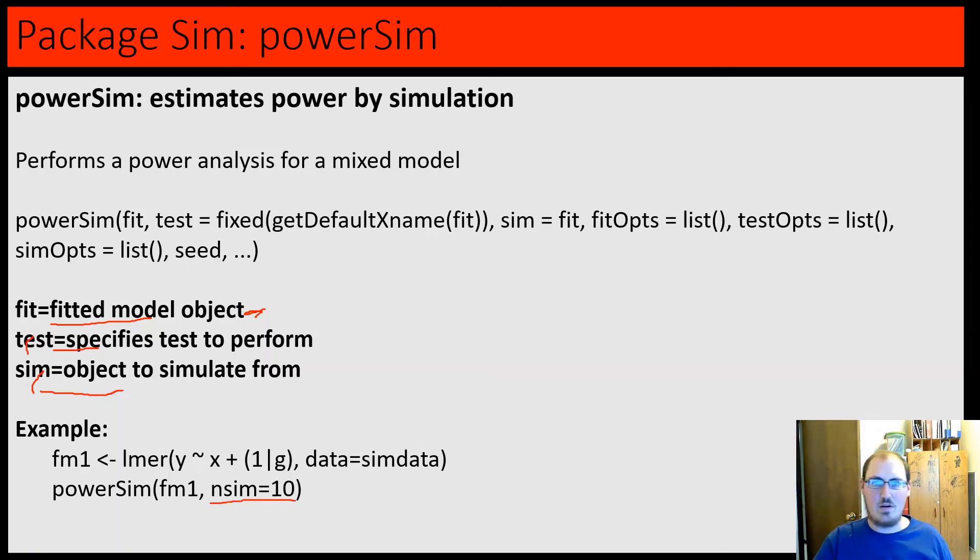So, our example here, you have just a generic linear mixed effect model, y. It's a function of x, and then some sort of group variable that's random. Or, yeah, random effect from whatever our sim data data set. We can run this powerSim on this model, and then we can actually set the number of simulations. I think the default is 1,000, so if you want to speed things up a little bit, you can do 10.